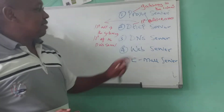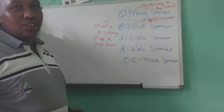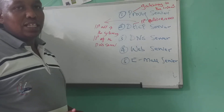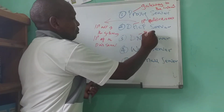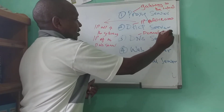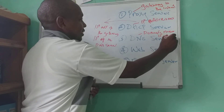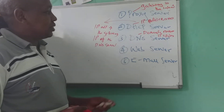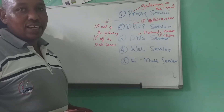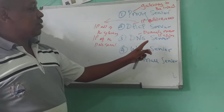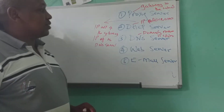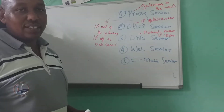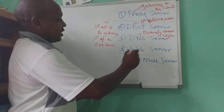The third server required in a local area network is the DNS server, which stands for Domain Name Server. This helps in translating domain names to their respective IP addresses. Since routers and other devices use IP addresses to locate devices in the network, domain names used by humans must be converted to IP addresses to be located in the network.